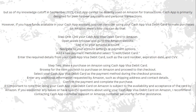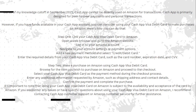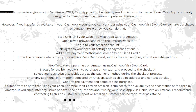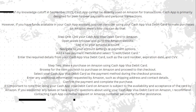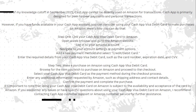Step two is to make a purchase on Amazon using your Cash App Visa debit card. Browse for the item you wish to purchase on Amazon and proceed to checkout. Select your Cash App Visa debit card as the payment method, enter any additional information requested such as shipping address and contact details, then confirm the payment and complete the purchase.